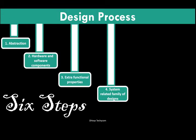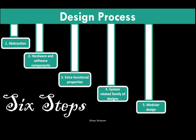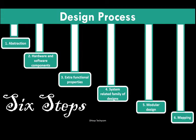The fourth thing is system-related family of designs. For example, if you have a chocolate vending machine, you need to analyze other family-related designs that you can target in the market. That is the fourth important step. The fifth step is the modular design, which will help you decide where the components have to be placed and how compact the designs can be maintained.